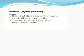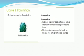Let's start today's lecture from Rabies. Rabies is also known as hydrophobia. It is a viral disease of human beings and other mammals. The virus attacks the nervous system. Rabies is caused by the Rhabdovirus, which is transmitted through mammals like dogs, bats, and foxes. The Rhabdovirus can enter the body by means of a bite from an infected animal and affects the nervous system, causing a condition known as hydrophobia.